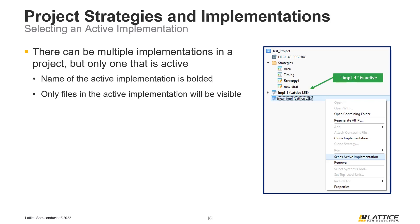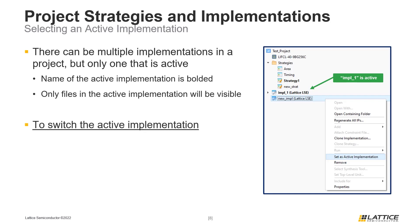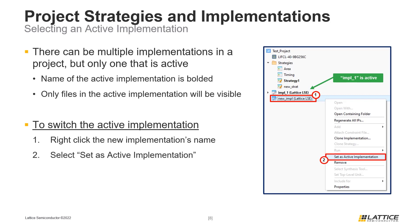To switch the active implementation for a project, right-click the name of the implementation you want to switch to. From the drop-down that appears, select Set as Active Implementation. The new implementation should now have its name in bold, indicating that it is active.